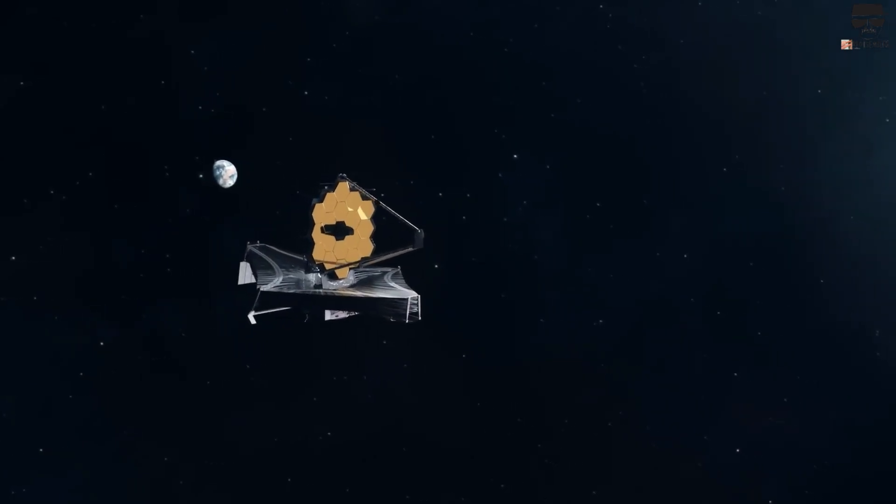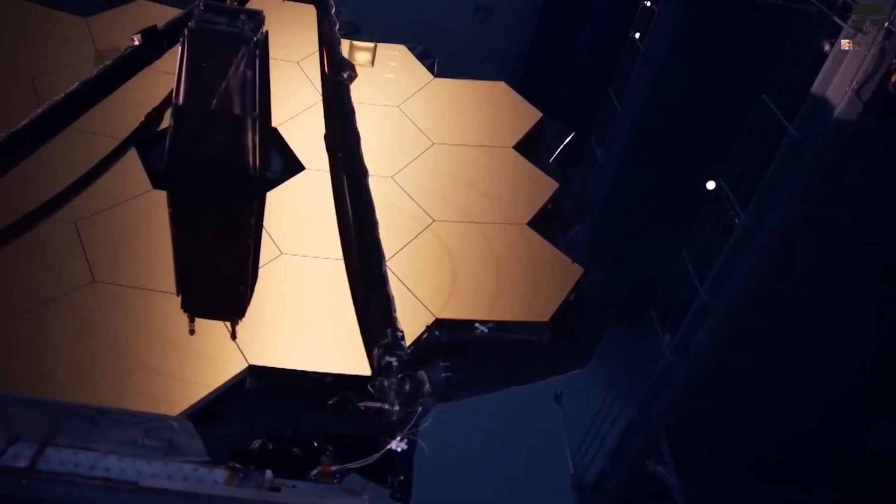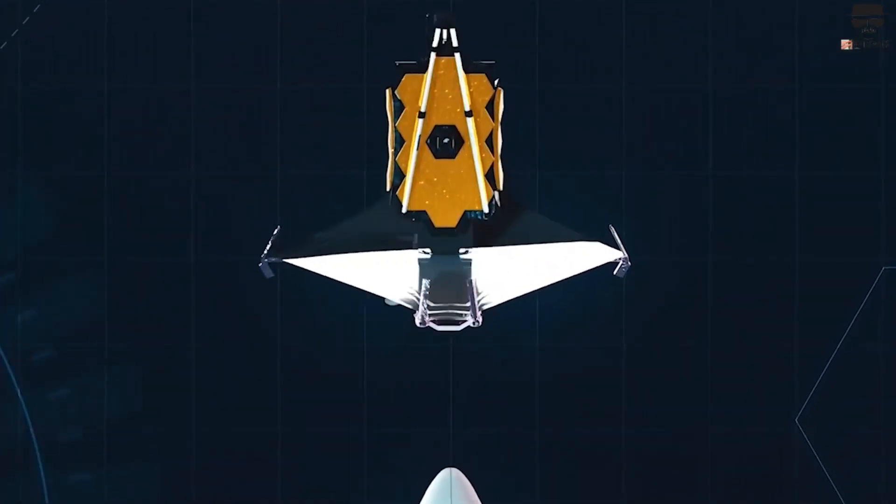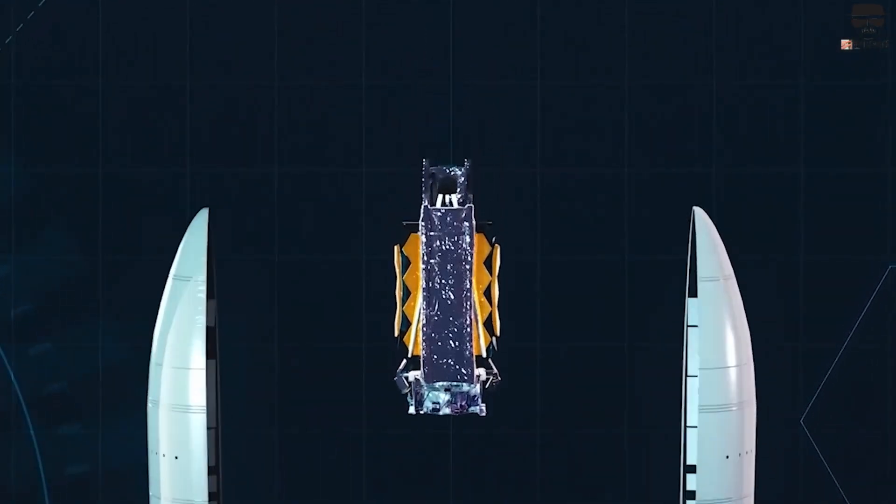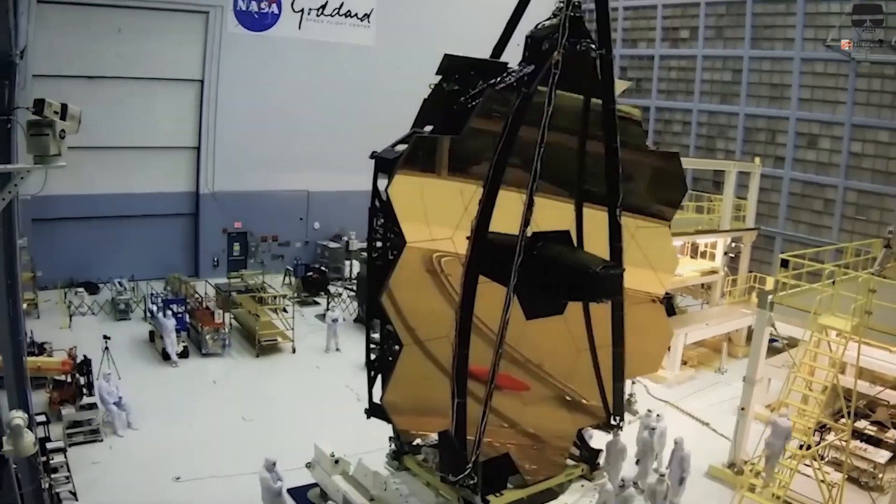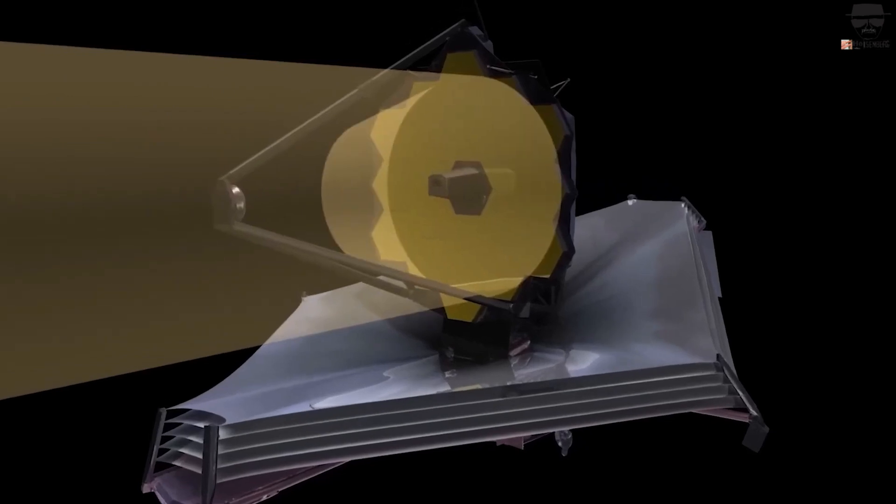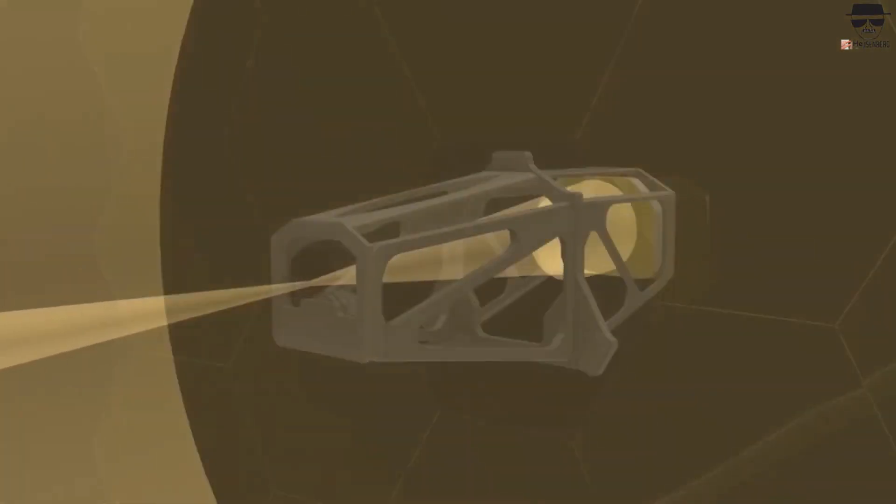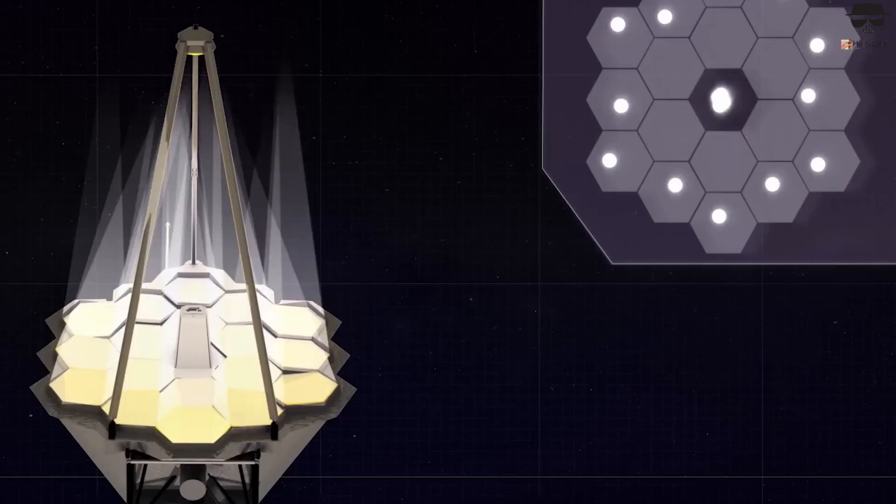It boasts a large sunscreen the size of a telescope, measuring a whopping 22 meters by 12 meters. The shield's purpose is to prevent heat from obstructing the infrared camera's ability to operate. Despite being nearly twice as big as Hubble, the JWST weighs just about half as much.